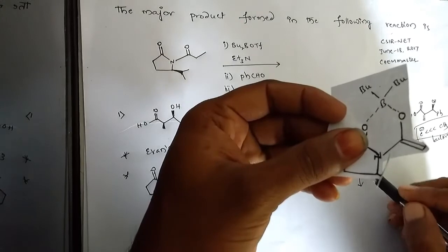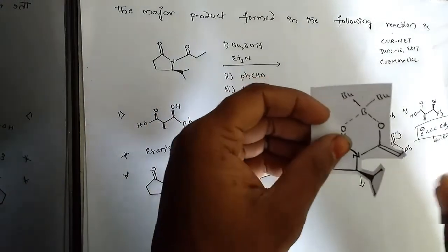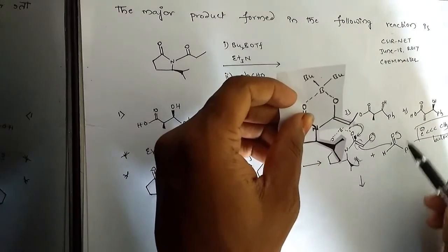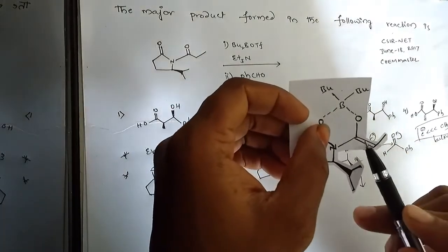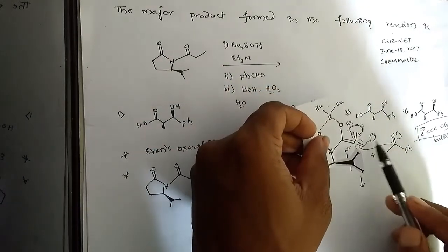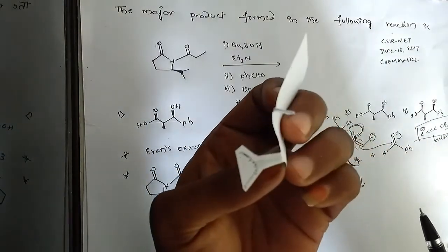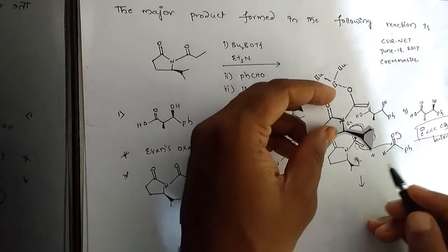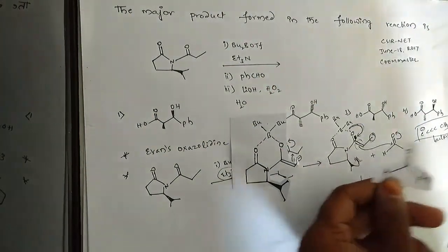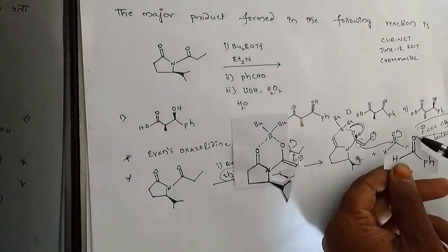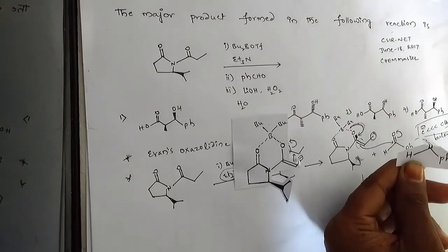If the electron attacks the aldehyde carbonyl group from below the methyl group, there is steric repulsion between the bulkier oxazolidine group and this methyl group. But if the electron attacks the aldehyde carbonyl group from above the plane of the molecule, then the methyl group goes below the plane. The oxygen also goes down the plane of the molecule.